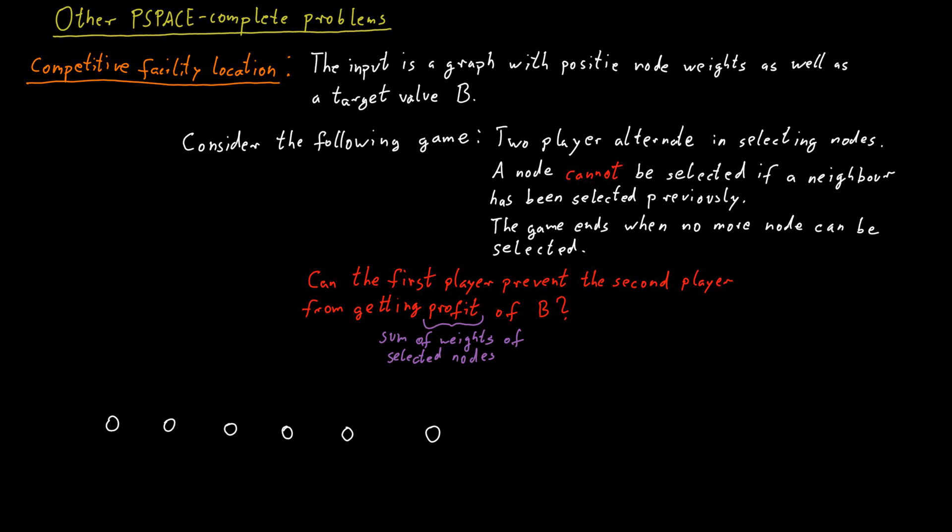So here's an example of a very simple graph. It's just a line and we have node weights that we write on top of the nodes of the graph. Let's say our threshold value is 20. So then the question would be if the first player to select a node can somehow prevent the second player from getting a profit of at least 20.